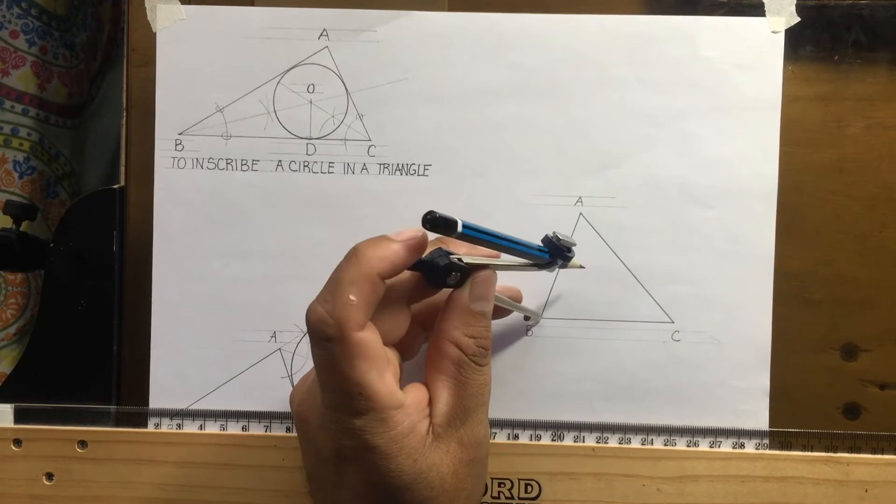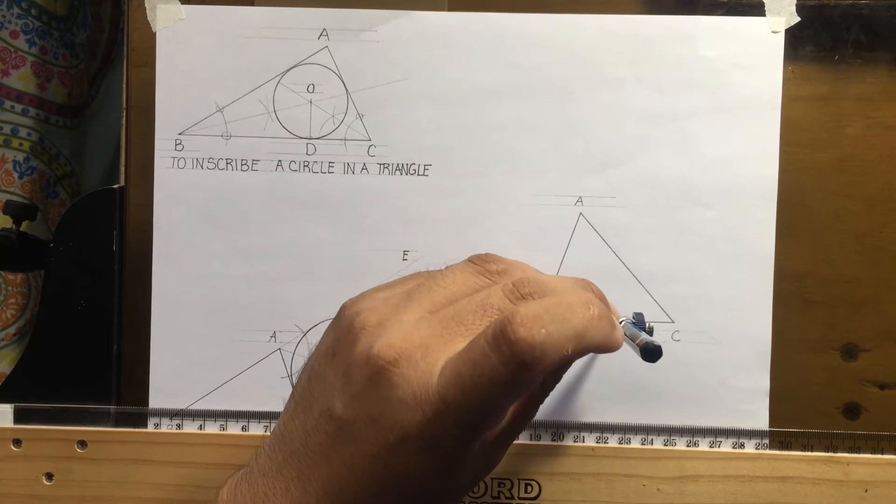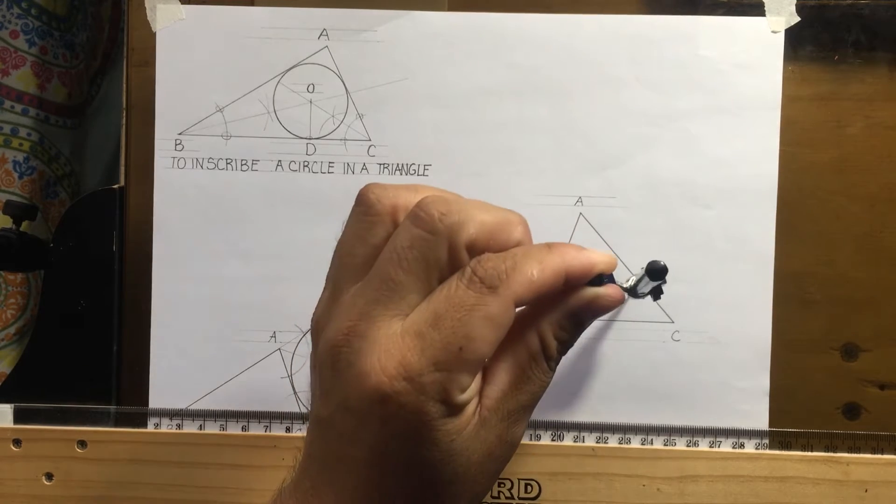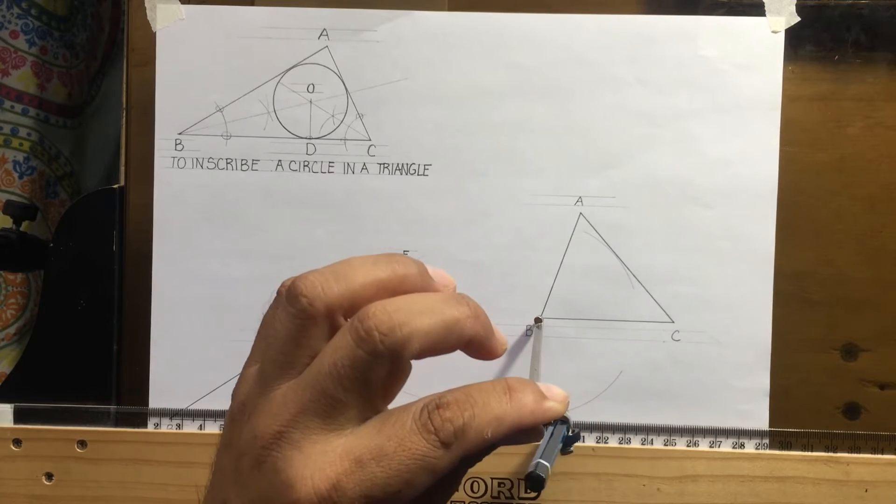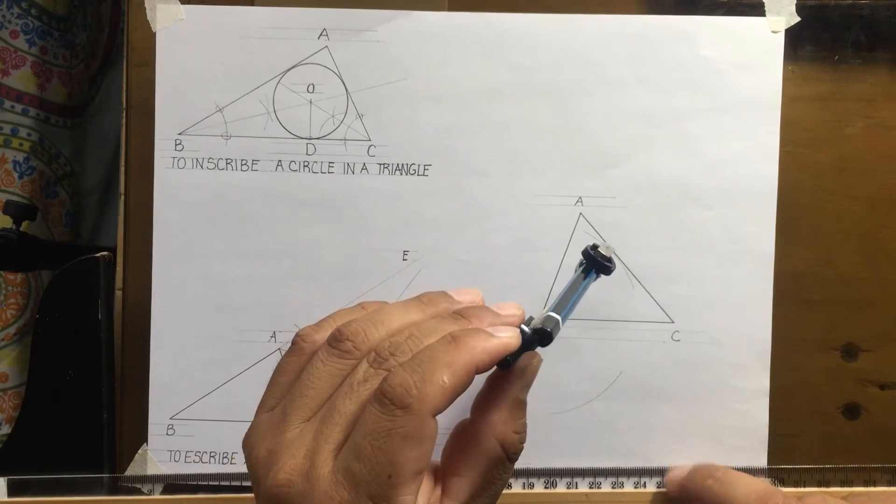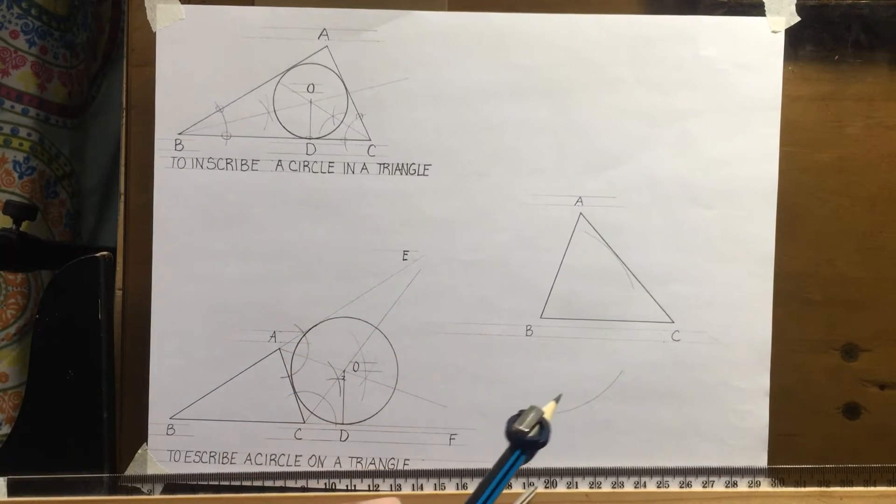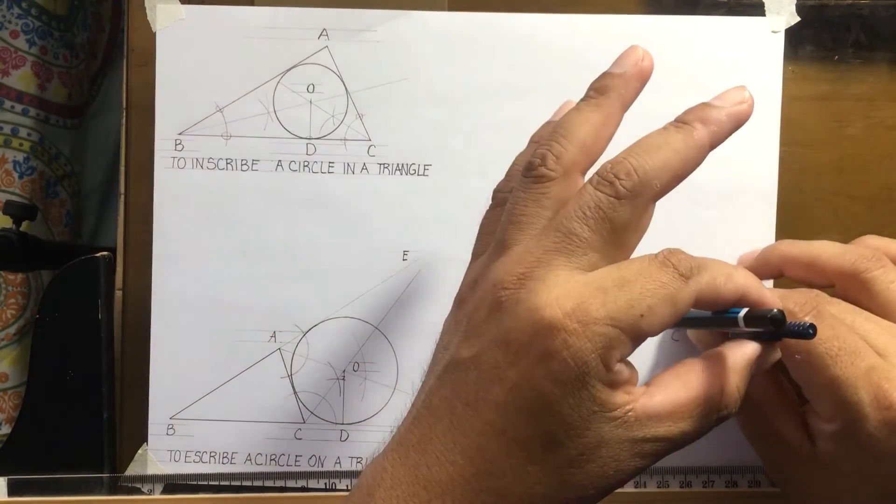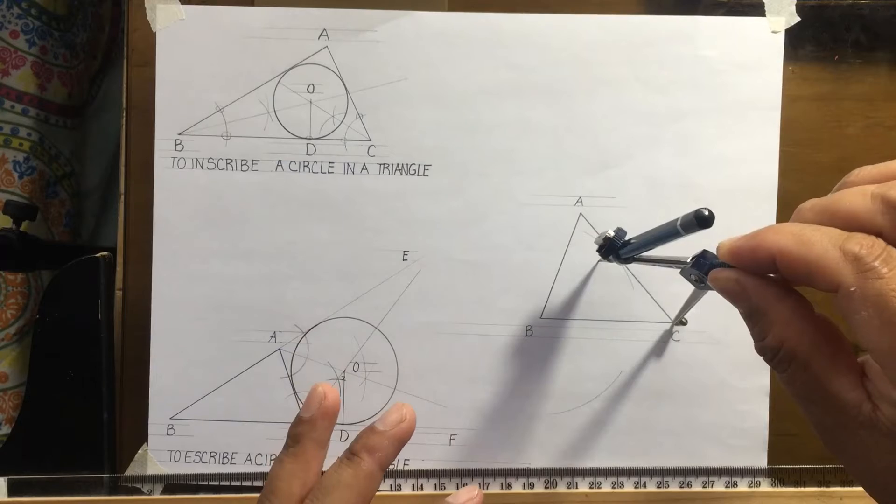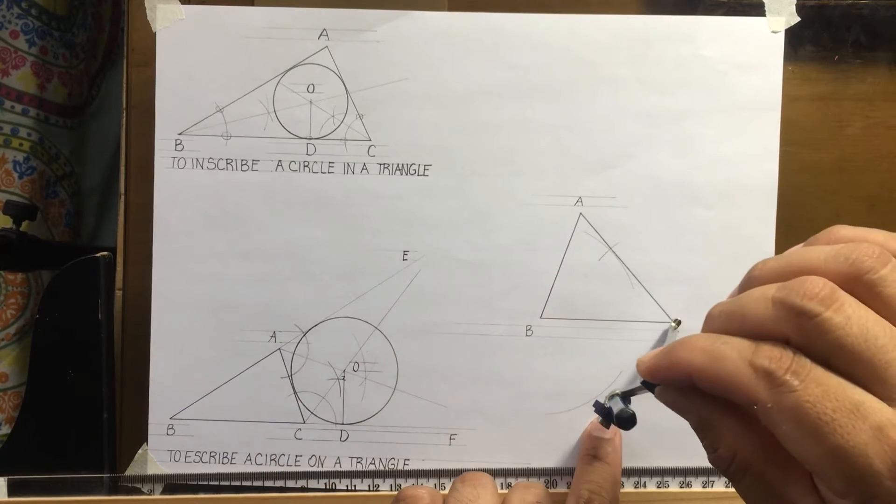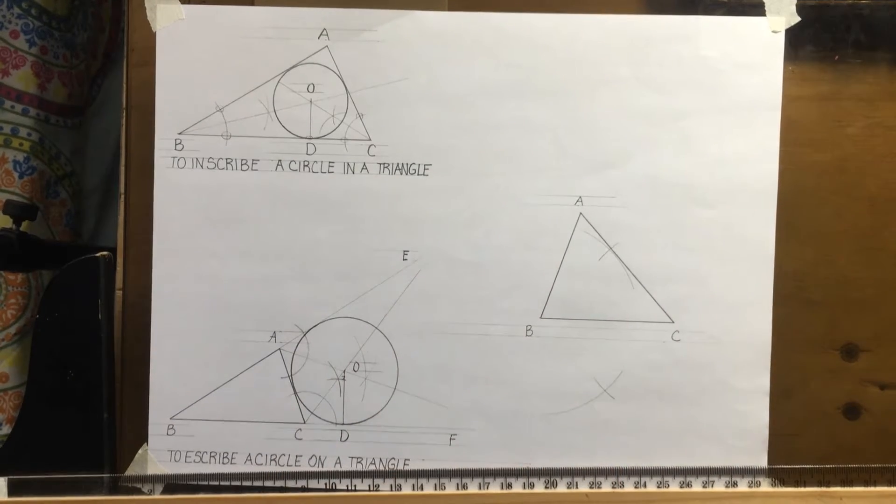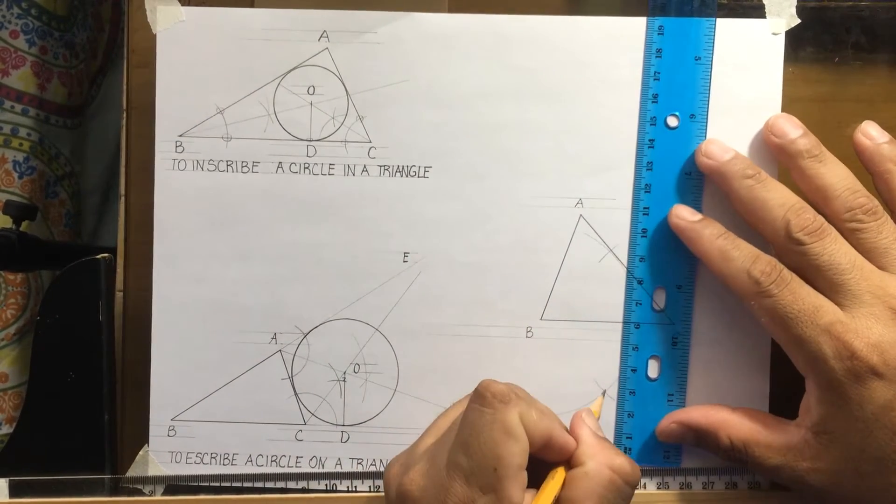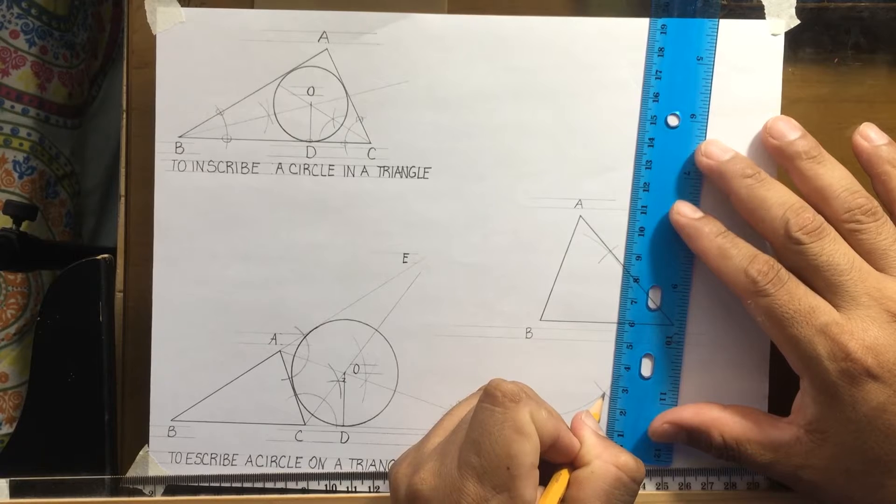I open my compass a bit more than half the side length. I scribe an arc above and one below from point B. Then with the same radius, I reposition my compass at point C and scribe arcs above and below to intercept the first ones. Then I use my ruler to join where these arcs intersect.